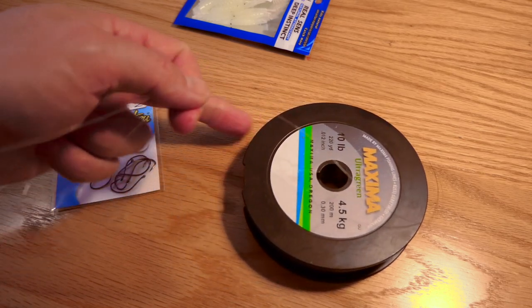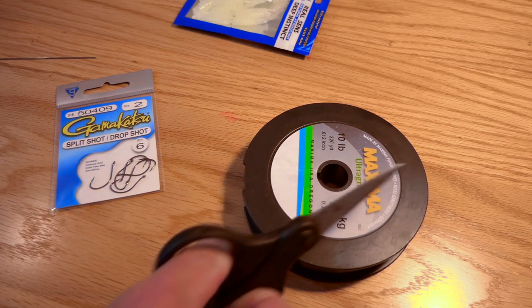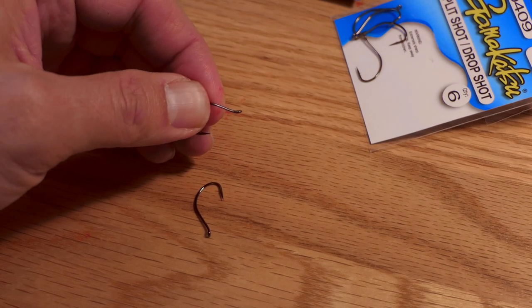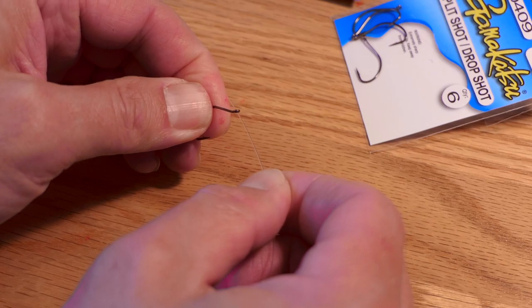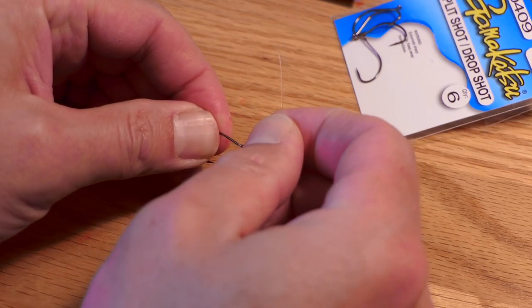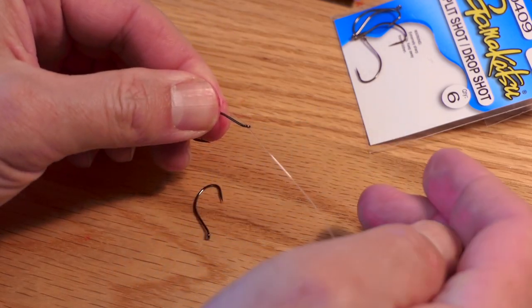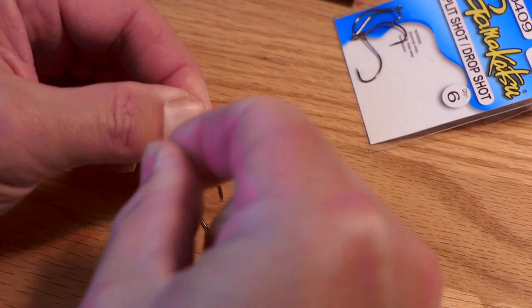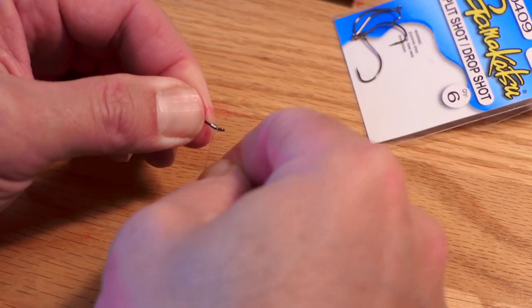So I'll pull out a little bit of 10lb Maxima Ultra Green. Don't need a lot here because I don't have really long leaders. It's very easy to do. So just take two hooks. Take your tag end, your line, and run it through the eye. And just run about an inch through the eye there. That's all you need to do. And then you're going to just wrap a Snell hook knot on here.